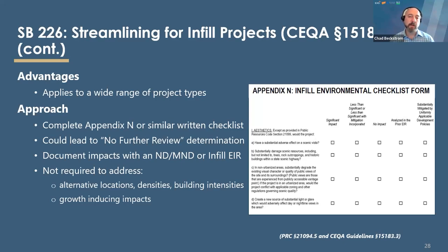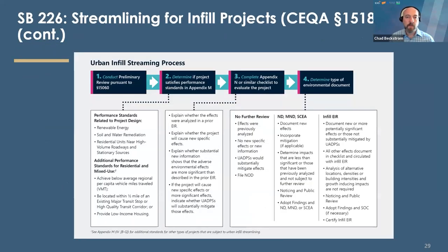Either way, additional streamlining benefits are that the analysis is not required to address growth-inducing impacts, and analysis of alternatives does not need to address alternative locations, densities, or building intensities. This flowchart from our guidance materials shows the process — from conducting the preliminary review of performance standards, completion of the environmental checklist, and determination of the type of environmental review required, along with the appropriate steps to take. This is available on SCAG's website, which we'll show you some of those guidance materials later.